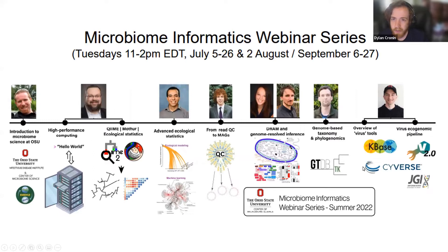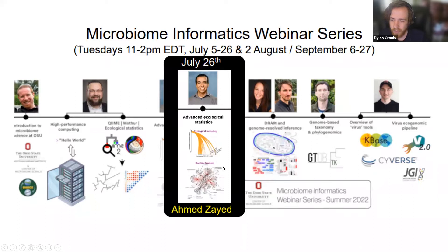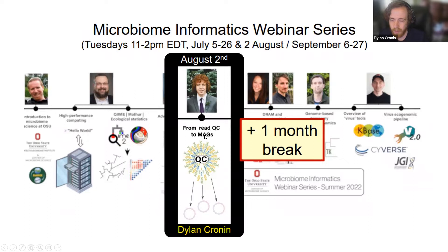This is the Microbiome Informatics webinar series. You've heard from Matt for introductions, Sharif for high-performance computing and using 16S for ecological inferences with QIIME and mothur, and from Ahmed about advanced statistics including network analysis through WGCNA. This time we're going from read QC to building genomes, along with steps for doing ecology from metagenomes. Afterwards there will be roughly a one-month break, picking back up in September.